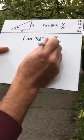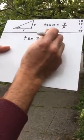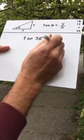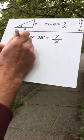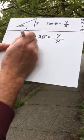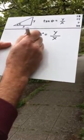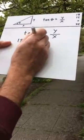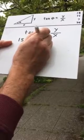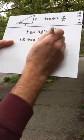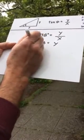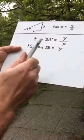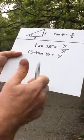I know the distance away is 15. I want to get y by itself, so I'm going to multiply both sides by x. So I have x, which is 15, times the tangent of 38, and that's going to give me the height of my tree in feet. So I just need to calculate the tangent of 38.